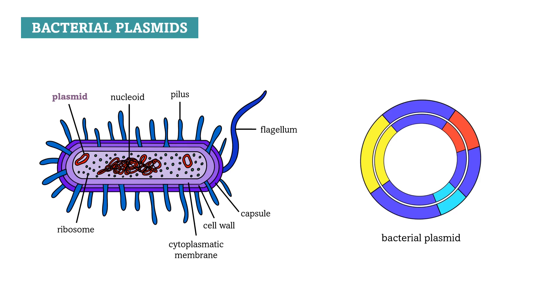Plasmids are introduced into bacteria by the process called transformation, about which we will talk in a different video. So, how do we actually insert a DNA fragment into a bacterial plasmid?